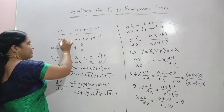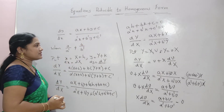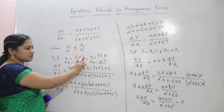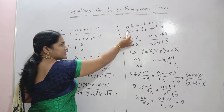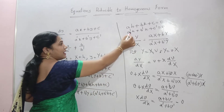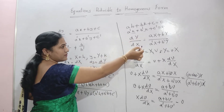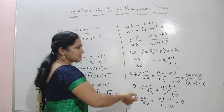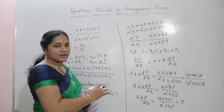So this is the procedure: if a differential equation is in the form dy by dx equals ax plus by plus c divided by a-dash x plus b-dash y plus c-dash, when a by a-dash is not equal to b by b-dash. Step one: put x equals X plus h and y equals Y plus k. Step two: make ah plus bk plus c equals zero and a-dash h plus b-dash k plus c-dash equals zero, then find h and k. Step three: write the homogeneous equation and put Y equals vX, separate and integrate.